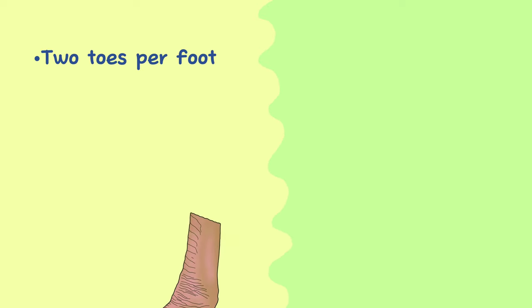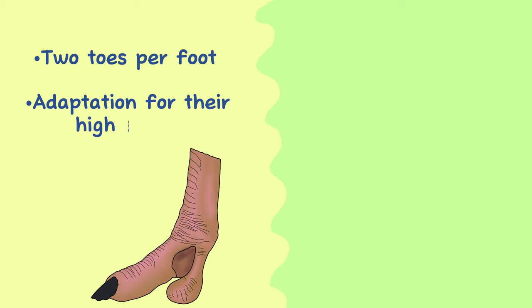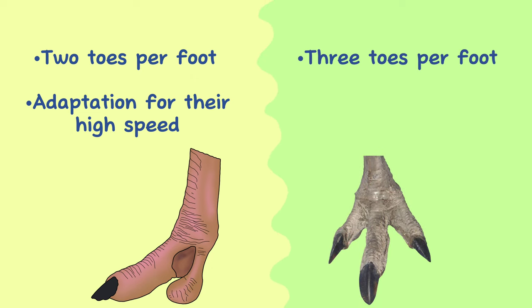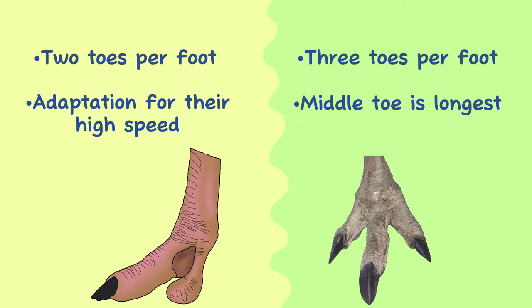Toes. Ostriches have two toes on each foot, which is an adaptation for running at high speeds. Rheas have three toes on each foot, with the middle toe being the longest.